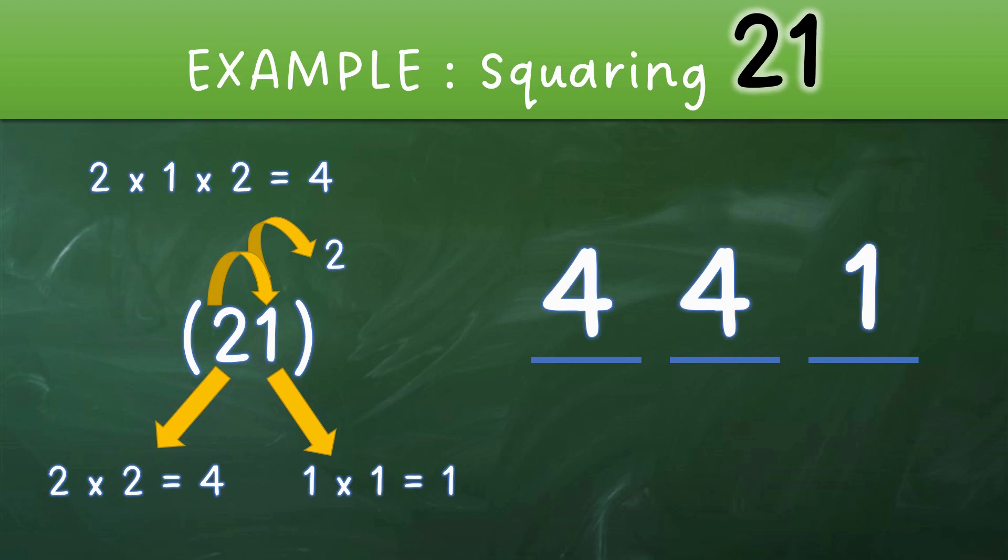Your final answer will be 441. See how simple this was? Just three steps: first square the left digit, then square the right digit, and then multiply all three numbers to get the middle number.